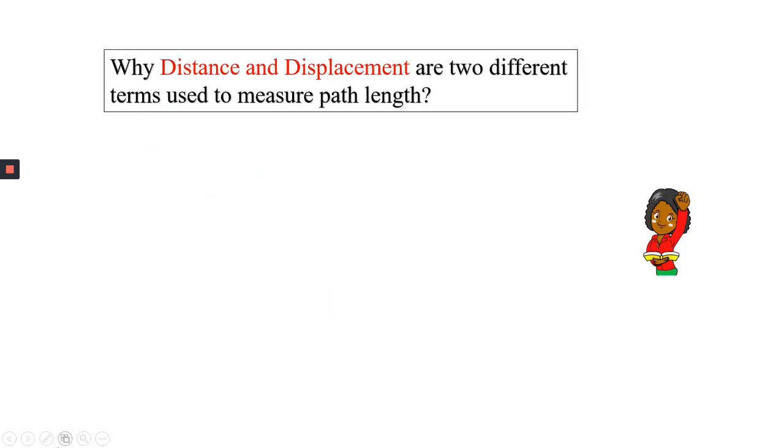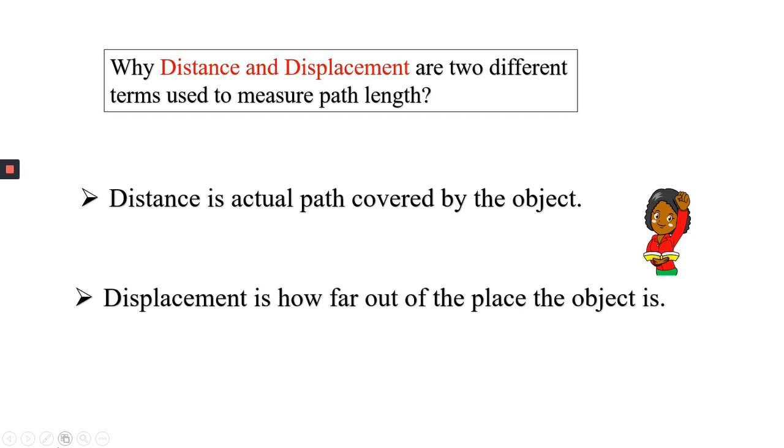Back to our original question: Why distance and displacement are two different terms used to measure path length? Here is the answer. Distance is the actual path covered by the object. Displacement is how far out of place the object is.